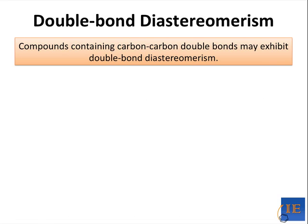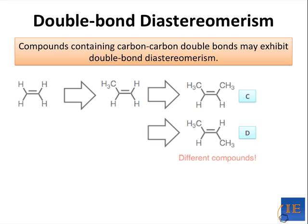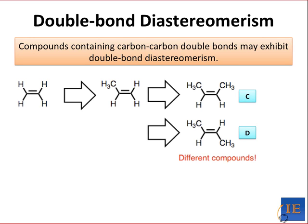An interesting example of diastereomerism that doesn't revolve around three-dimensional tetrahedral carbons are compounds containing double bonds. Let's start with the parent alkene ethylene, which is drawn here, and add one substituent to it. There's only one possible way to do this — any of the four positions are equivalent — and this leads to propene. Now let's add a second methyl substituent.